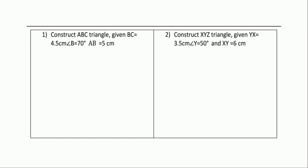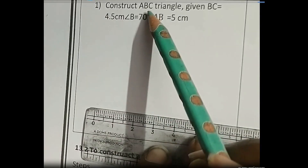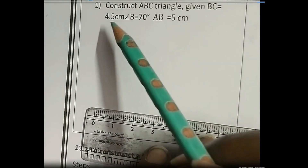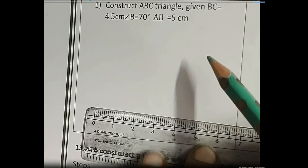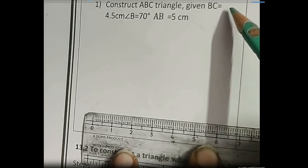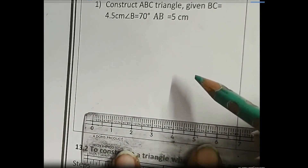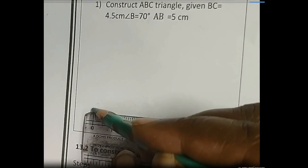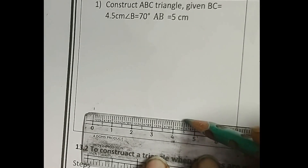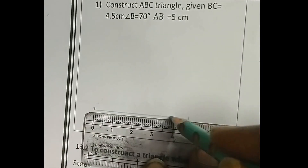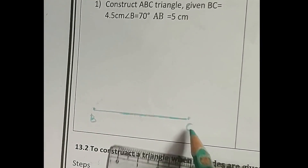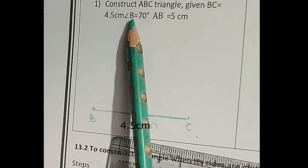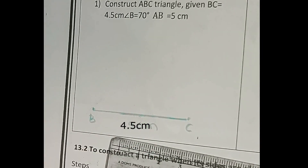Here two questions are given according to two sides and one angle. Let's start our construction. Question number 1: Construct triangle ABC given BC is equal to 4.5 cm, angle B is equal to 70 degrees, and AB is equal to 5 cm. First we take BC, that is 4.5 cm. We start from 0, and 4.5 is here. Draw a line segment and name it BC.